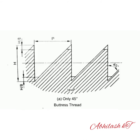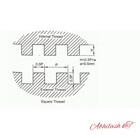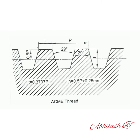Next is buttress thread — it is a combination of V and square thread, used where power transmission takes place in one direction. Next is square thread — it has a square form as its flanks are normal to the axis. The profile of both external and internal threads are square. It is used for machine tools, screw jacks, etc. Next is Acme thread — it is a modified form of square thread with a thread angle of 29 degrees. It is stronger than the square thread and ideal for power transmission.